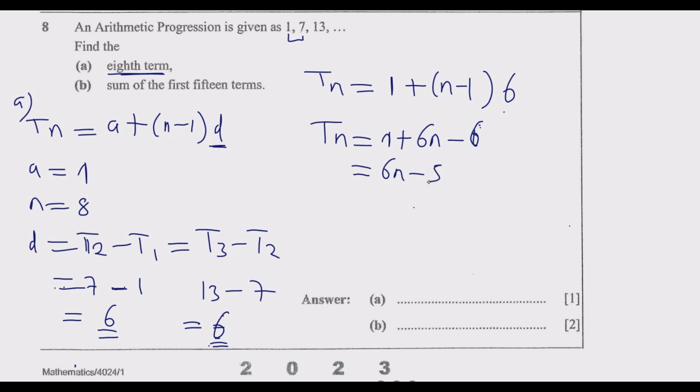Once I have this formula, it's just a matter of substituting to find any term, whether they told me to find the tenth or twentieth term. In this case, our n is 8, so 6 times 8 minus 5. Six times eight is 48, so 48 minus 5 is 43. The answer is 43.